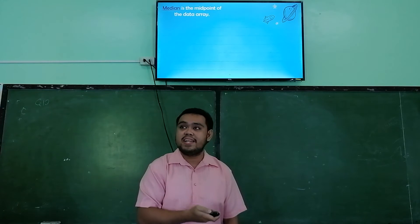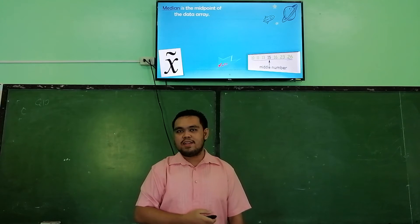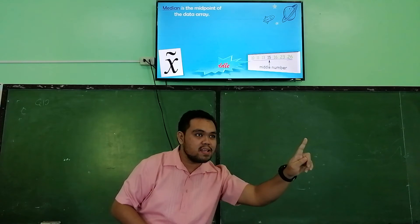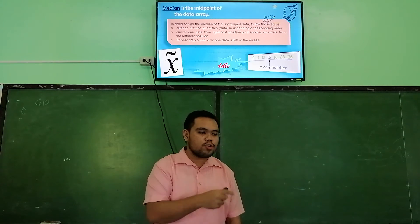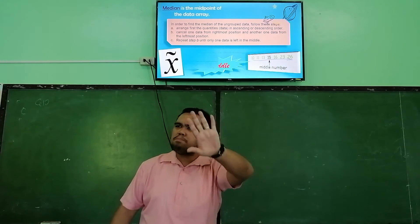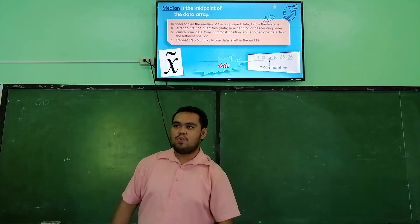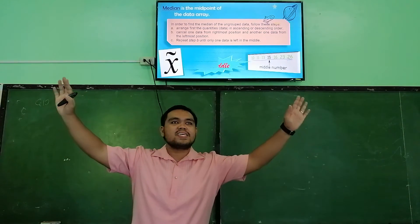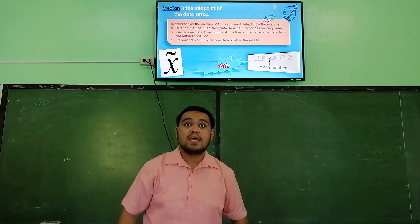Next we have the median. There is a symbol for median. When we talk about median, just bear in mind: middle. Median means middle. In order to find the median, you need to arrange the data first. Unlike the mean where you simply add them all, for the median you need to arrange it in ascending or descending order. After you arrange, apply the cancellation method — cancel the outermost values from the right and left sides until the middle is left.